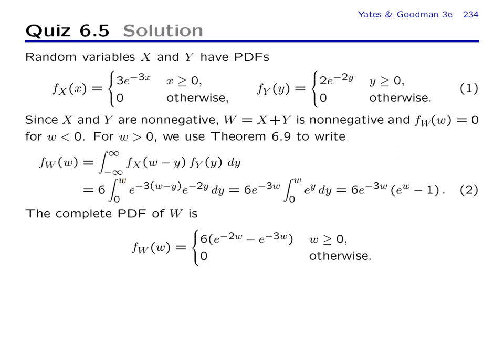And now we just plug in the expression during the interval from 0 to w. So when we plug in this expression, there's a 3e to the minus 3 times w minus y. This was the PDF of x at w minus y. And there was a 2e to the minus 2y from the PDF of y. But the factors 2 and 3 that were in front of these functions, they were rolled into the 6 over here.